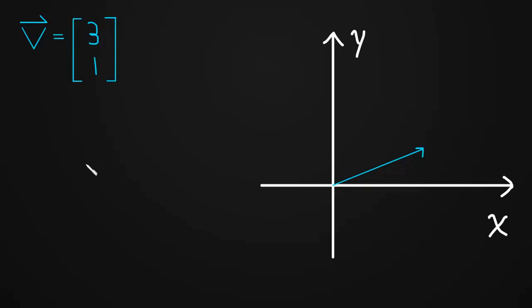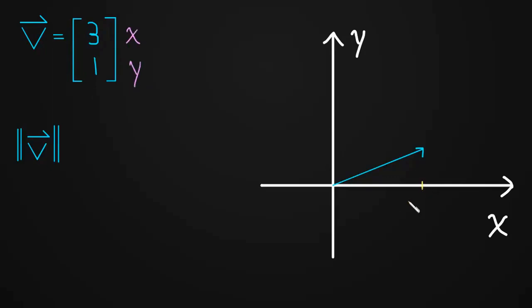Let's find the length of V = (3, 1). Before we do that, let's get some notation out of the way. When we're talking about the length of a vector, we write double bars around it — almost like a double absolute value — and this is read as 'the length of V.' Going back to our vector V, its X component is 3 and its Y component is 1, meaning we've moved over 3 in X and up 1 in Y, forming a right triangle. The length of this vector is just the hypotenuse of this triangle.